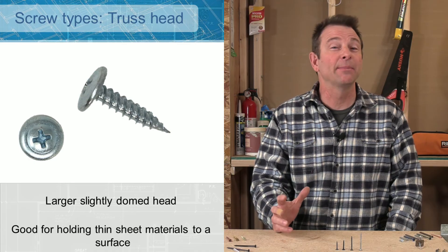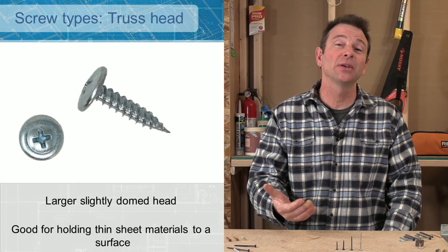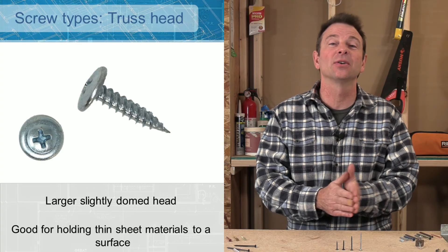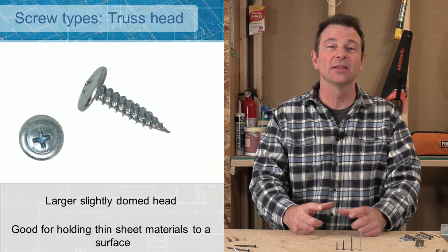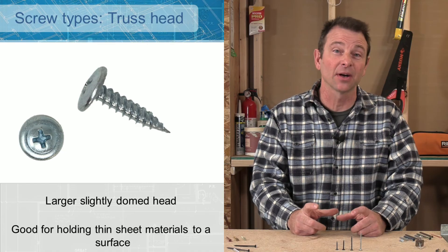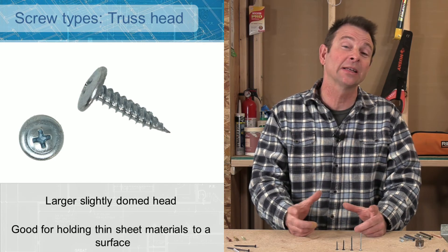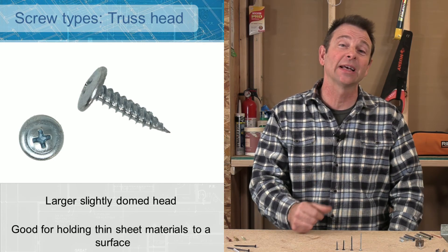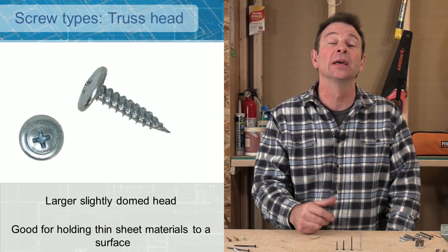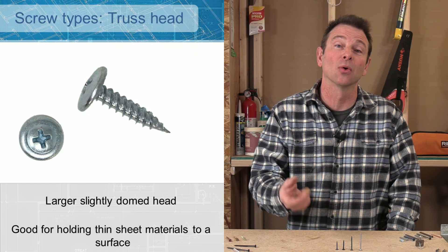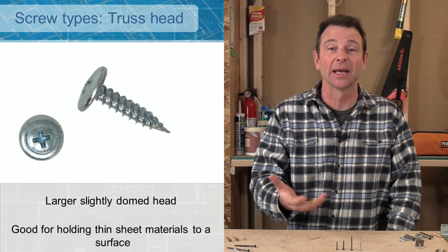A truss head screw can be used for metal to metal connections. It can also be used to connect thin materials to a base material. As you can see, the benefit of a truss head screw is a very large head. I would compare a truss head screw to a roofing nail. This is the screw equivalent. It has a very wide head. This one has a Phillips drive on it. And look at that point. That is a self-piercing point that pierces metal or thin sheet metal. You might use something like this if you were framing metal studs.